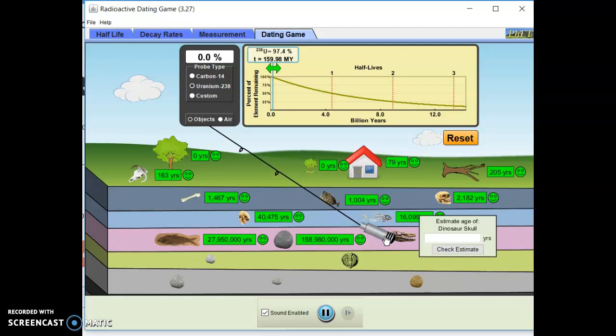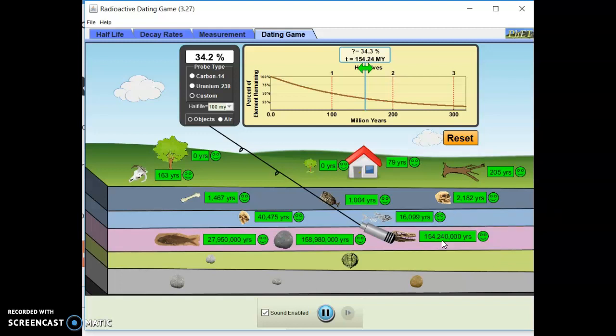Moving to dinosaur skull. Okay, uranium is a no-go. Let's try custom at zero. Ten million. There we go. So, you just got to kind of play with these settings here. Thirty-four point two. Okay. One hundred and fifty-four. And forty million. All righty. Looks like we got five more.